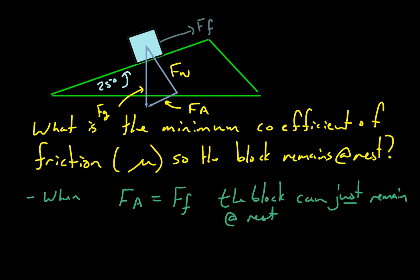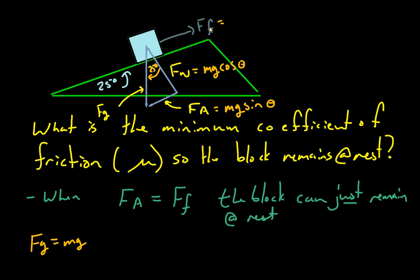So we know the force of gravity, or weight: FG equals MG. And if this is FG, and we transfer this angle up, F.A. is going to be equal to MG times sine theta — it's the opposite side of the angle. And the normal force FN is going to be MG cosine theta. If you remember, FF was equal to the normal force times mu, so mu times FN, which gives us mu times MG cos theta.